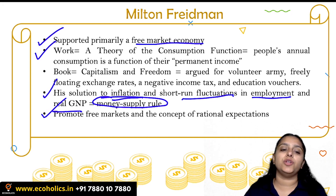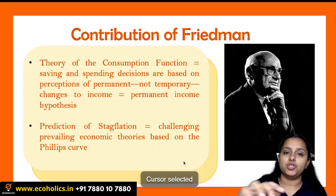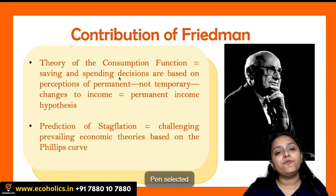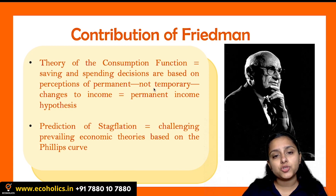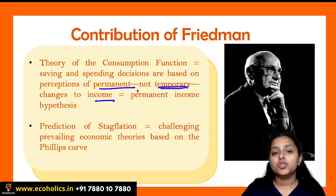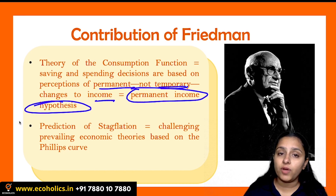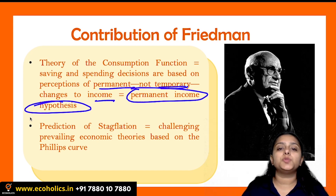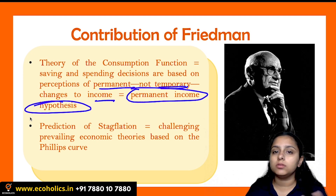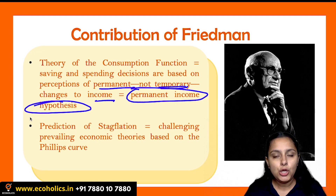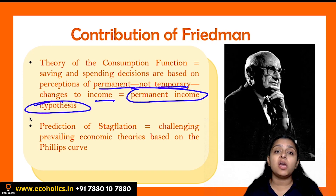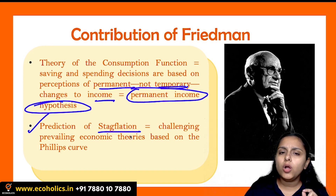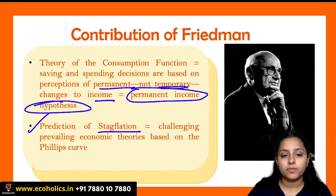Friedman promoted the idea of free markets without government intervention, unlike Keynesians. Under the Permanent Income Hypothesis, permanent income is the income expected to persist over the long run. For example, receiving a bonus in one month is temporary income, not permanent, so people will not change their consumption based on that one-period bonus. Friedman also predicted stagflation.